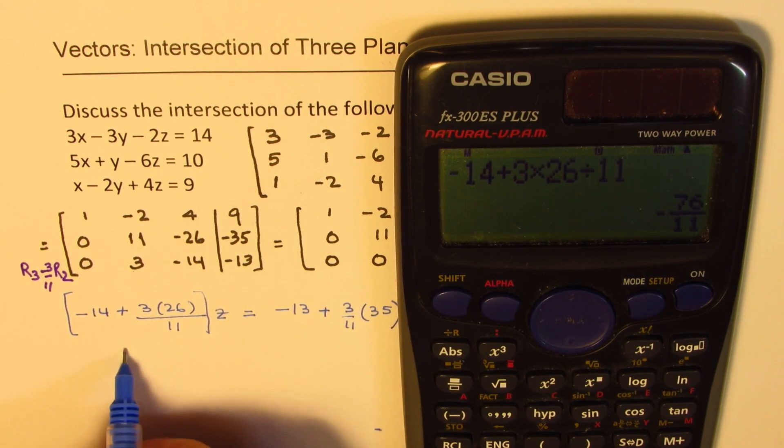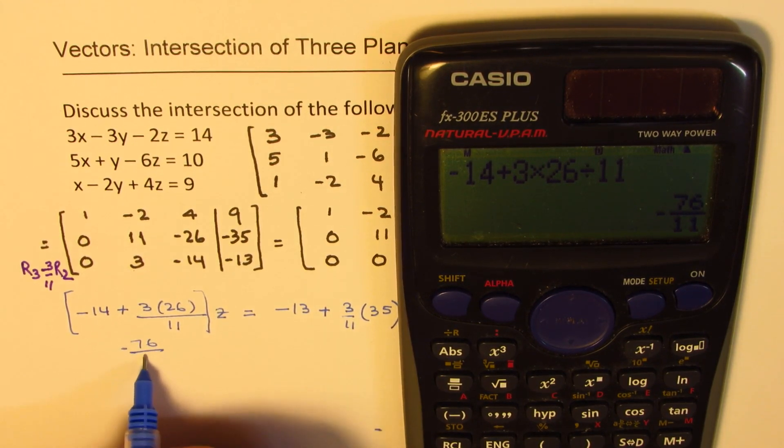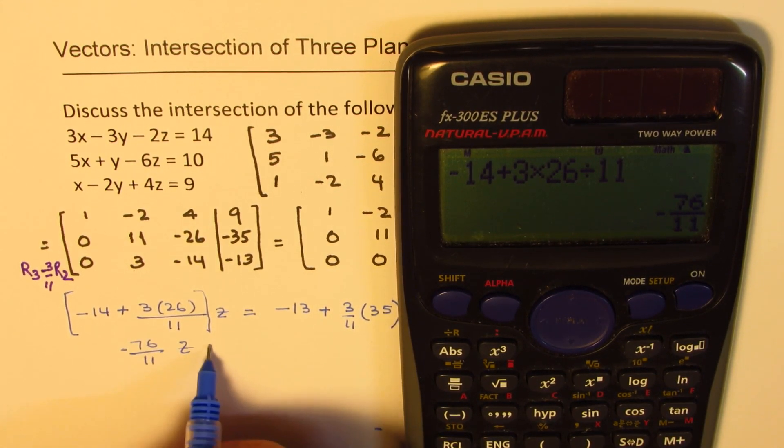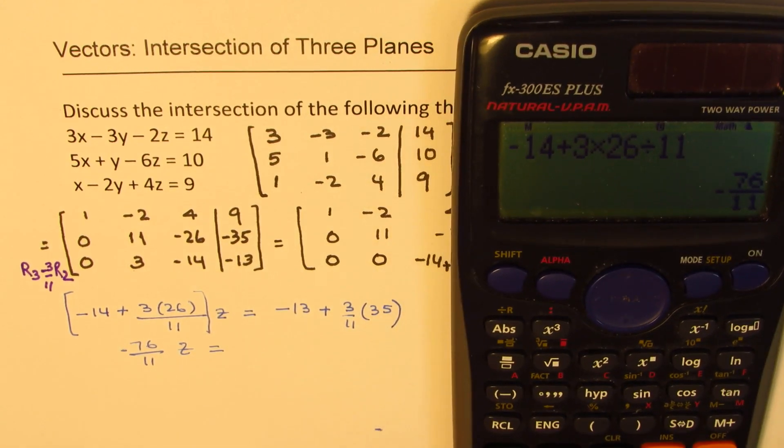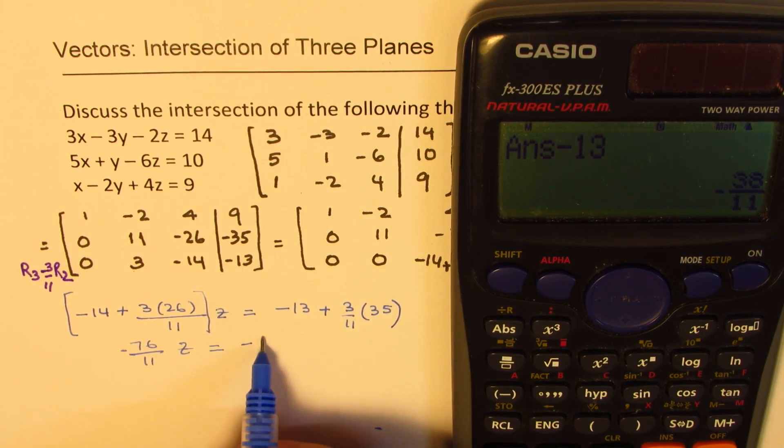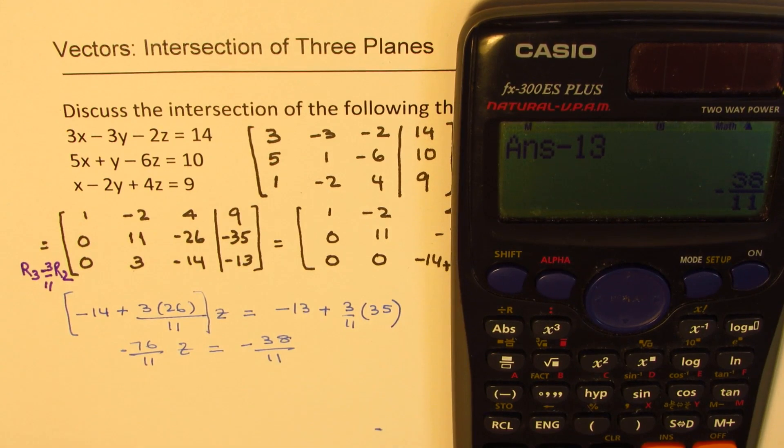So that gives you a number minus 76 over 11 z equals to on the right side. We have 3 times 35 divided by 11 and we'll take away 13 from this. So that gives you minus 38 over 11. That's what you get.